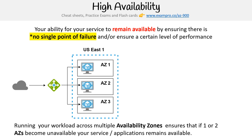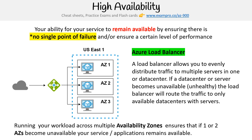How would you distribute or manage the traffic to all three? That's where an Azure load balancer comes into play. That green triangle with the arrows is the representation of a load balancer. A load balancer allows you to evenly distribute traffic to multiple servers in one or more data centers.